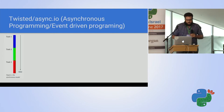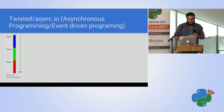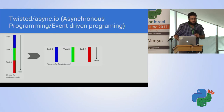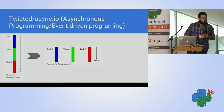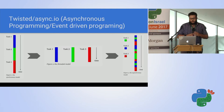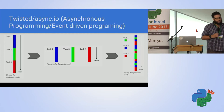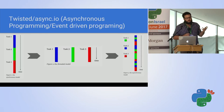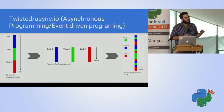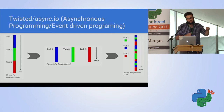In the synchronous model there are three tasks and we run one, finish it, run the second, then the third. In the threaded model we try to run all simultaneously, but because of the GIL they don't really run simultaneously. In event-driven programming, each task is broken into smaller subtasks, and each time one enters a blocking IO operation we switch context to another event.